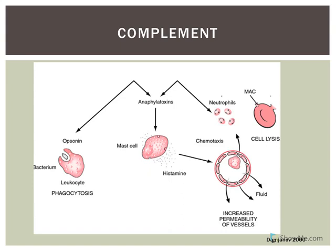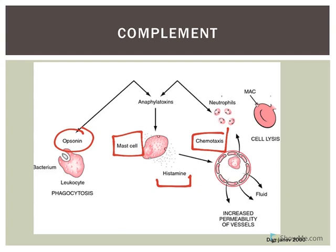Besides opsonization, complement also allows chemotaxis — attracting phagocytes into various regions by releasing chemicals that cause more white blood cells to come into infected areas. Complement also stimulates inflammation by enhancing the release of histamine from mast cells. Histamine increases permeability of vessels and is a vasodilator, which increases blood flow to the area. The membrane attack complex promotes lysis of cells.